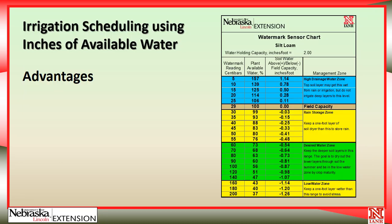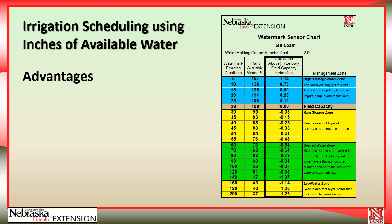The first advanced irrigation scheduling technique we're going to calculate involves inches of available water. To do this, we'll take a look at the center column in the chart titled 'Soil Water Above or Below Field Capacity in inches per foot of soil.' If you had a watermark reading of 15, you can see that you would have a positive 0.5.